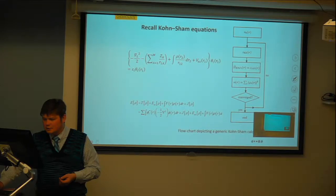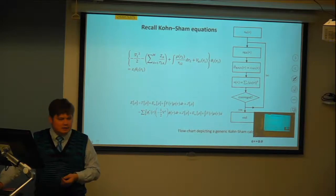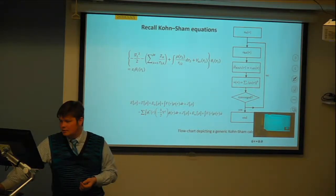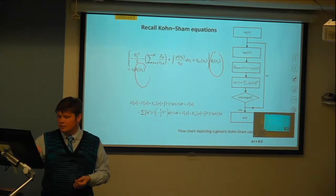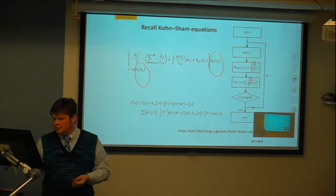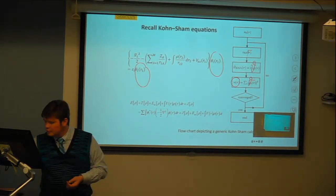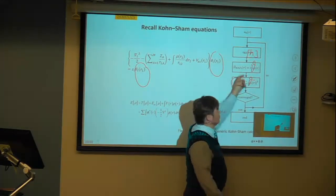What we did last time in the lecture: you did the main procedure for density functional theory. You set up an equation for orbitals, the orbitals determine the density, and the density again determines the equation for orbitals.